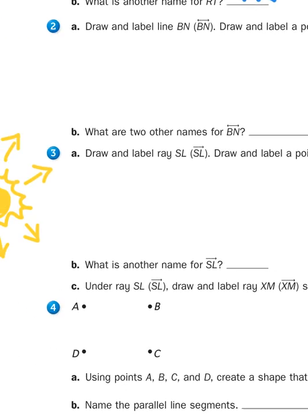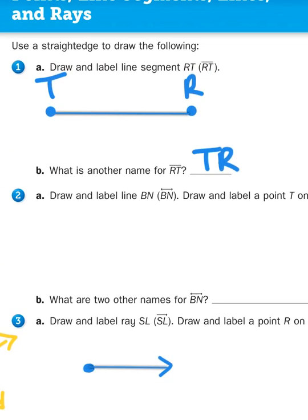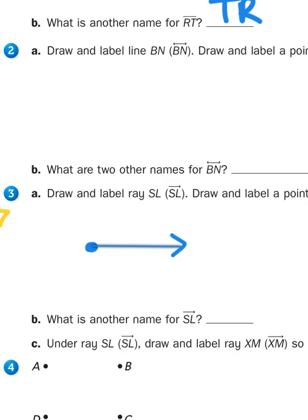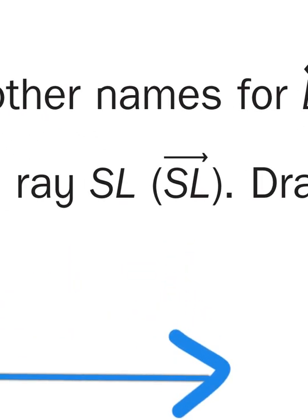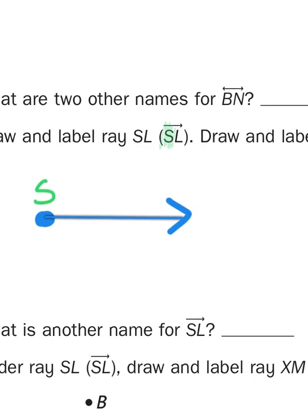So let's draw a ray labeled SL. I'm going to use my drawing tool here. There we go. I'm going to put an arrow on it. So if you notice that in the first problem, segment RT can be labeled TR as well. However, rays are pickier. You have to label the ray according to which letter comes first. The S comes first in this name, so that means that's our endpoint. We have to label the endpoint as S. And then we have to draw another point somewhere on here and label that L.